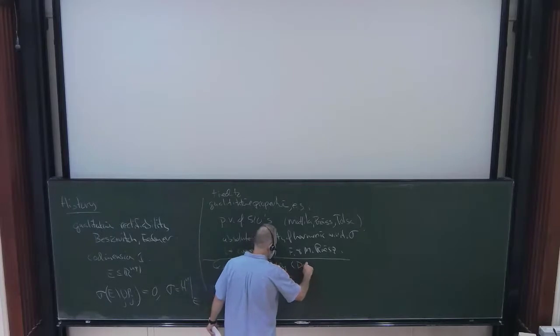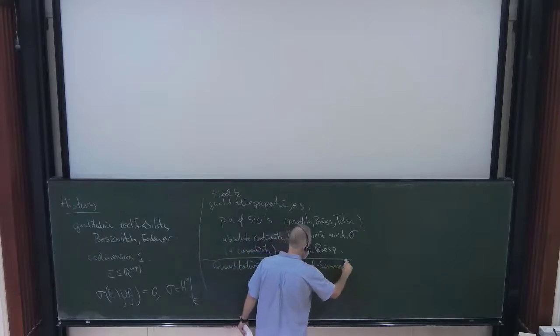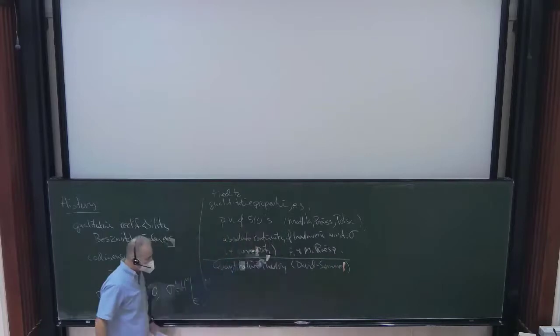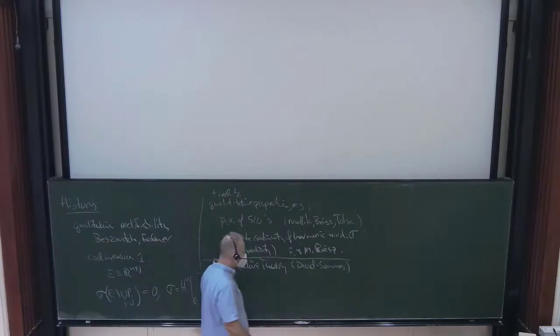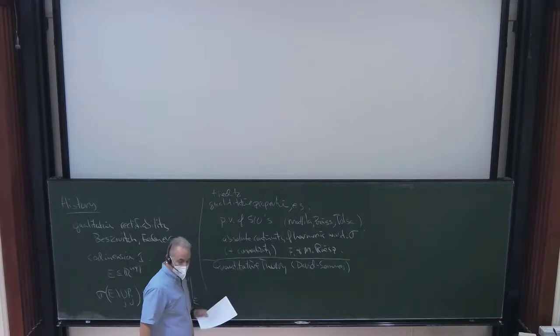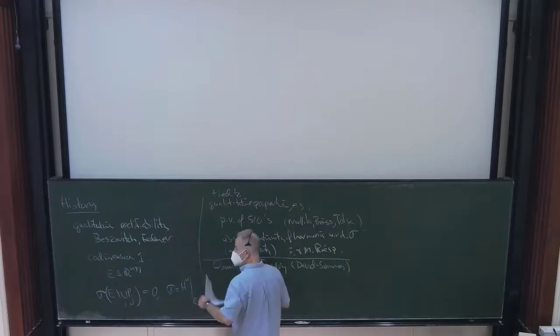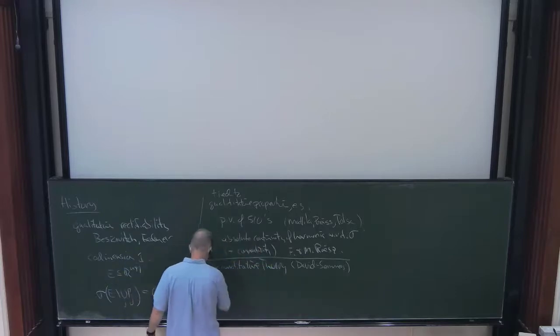This qualitative theory is not really my emphasis today. I want to emphasize the quantitative analog of this theory. And it was David and Semse who basically created this from more or less from scratch, starting in the 1990s. So this requires a couple of definitions to say what this is about. So again, I remind you, we're always in the codimension one case. So we first need a definition, the notion of Ahlfors regularity or Ahlfors-David regularity.